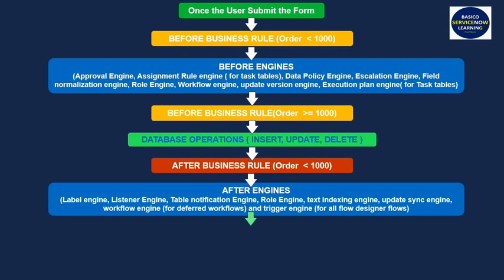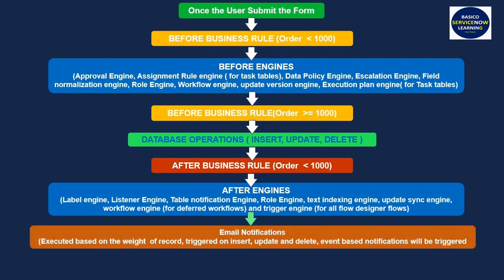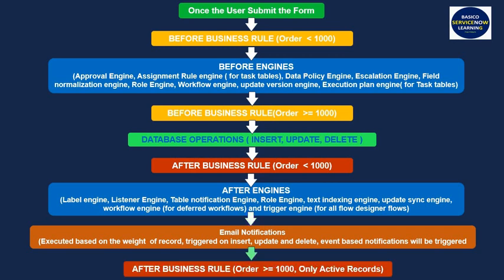After that, email notifications are executed based on the weight of the record. Email notifications are triggered on insert, update, and delete, and event-based notifications will also be triggered once the email notification gets triggered. Finally, after business rule scripts with order greater than or equal to 1000, and only active records, get executed.